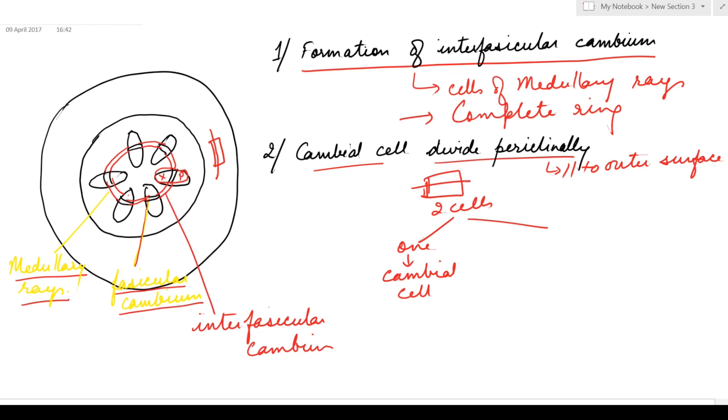And the second one will either differentiate into secondary xylem or into secondary phloem. If differentiation occurs towards the inner side, it is secondary xylem. If differentiation occurs towards the outer side, it is secondary phloem.